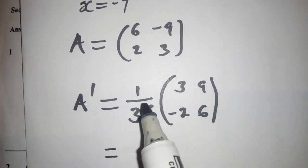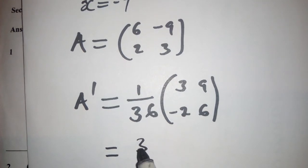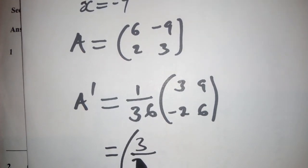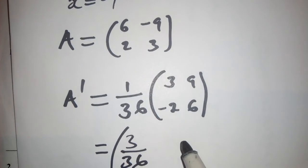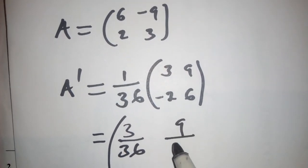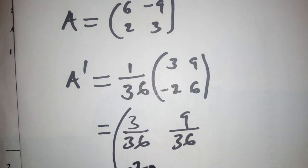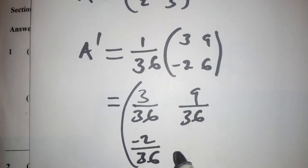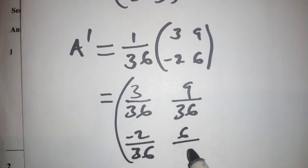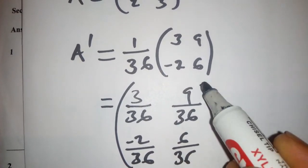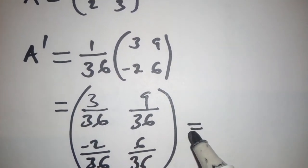When we multiply throughout, we get 3 over 36, 9 over 36, negative 2 over 36, 6 over 36.